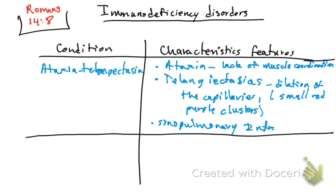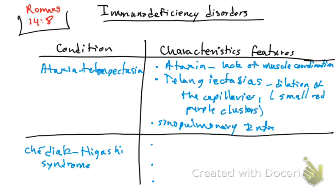The next disease we are going to see is Chediak-Higashi syndrome. For Chediak-Higashi syndrome, we're going to see three characteristics. The first one is oculocutaneous albinism — so the patient shows characteristics of albinism affecting the skin and eyes.